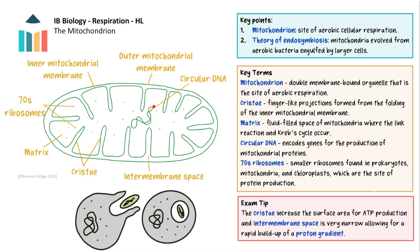You'll also see circular DNA and 70S ribosomes inside, which are both similar to what's found in prokaryotes. This, along with the double outer membrane, provides evidence for the theory of endosymbiosis. This theory suggests that eukaryotic cells evolved from large prokaryotic cells that obtained nutrients through phagocytosis. Some of these larger prokaryotic cells engulfed smaller prokaryotic cells which survived and developed a symbiotic relationship with the host cell. It is believed that mitochondria share a distant evolutionary ancestry with engulfed bacteria that carried out aerobic respiration. The outer membrane of the mitochondrion originated from the host cell's membrane during the engulfment process, while the inner membrane is thought to be derived from the original plasma membrane of the engulfed prokaryote.